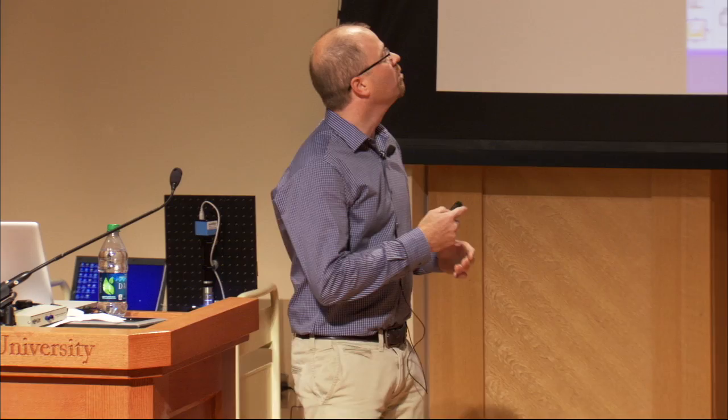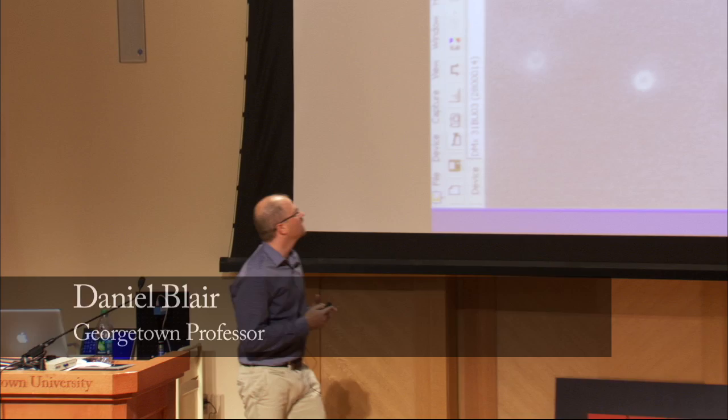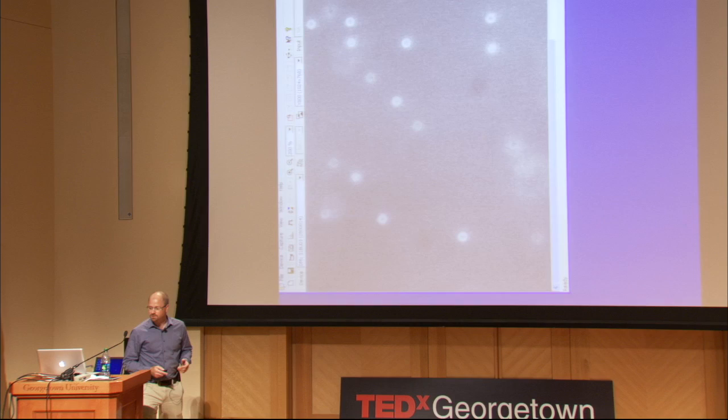Thank you very much. It's a real pleasure to be here. What we're doing right now is proving the existence of atoms and molecules. I don't know if you realize that, but this is exactly what Albert Einstein wrote his PhD thesis about. And if we did this in 1926, we all would have won the Nobel Prize in Physics, which was great because Perrin was able to do that.